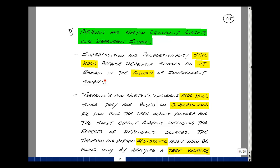Superposition and proportionality still hold because the dependent sources don't remain in the column of independent sources. Thevenin and Norton's theorems are based on superposition, so they're also true.